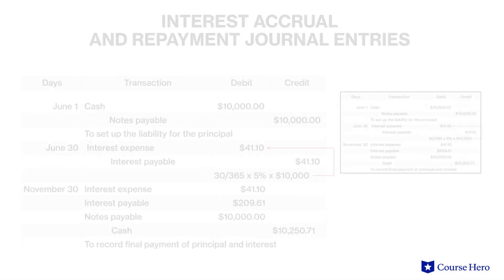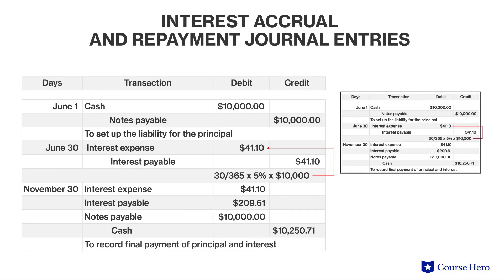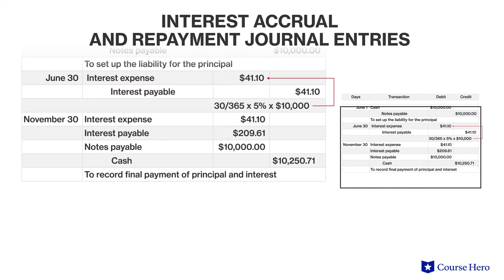At the end of each month, J Company will recognize interest based on the number of days in that month. The entries necessary to recognize the accrual of interest include a debit to interest expense and a credit to interest payable. On November 30th, the company will recognize the final month of accrued interest and then make a total payment of $10,250.71 to pay off the note.